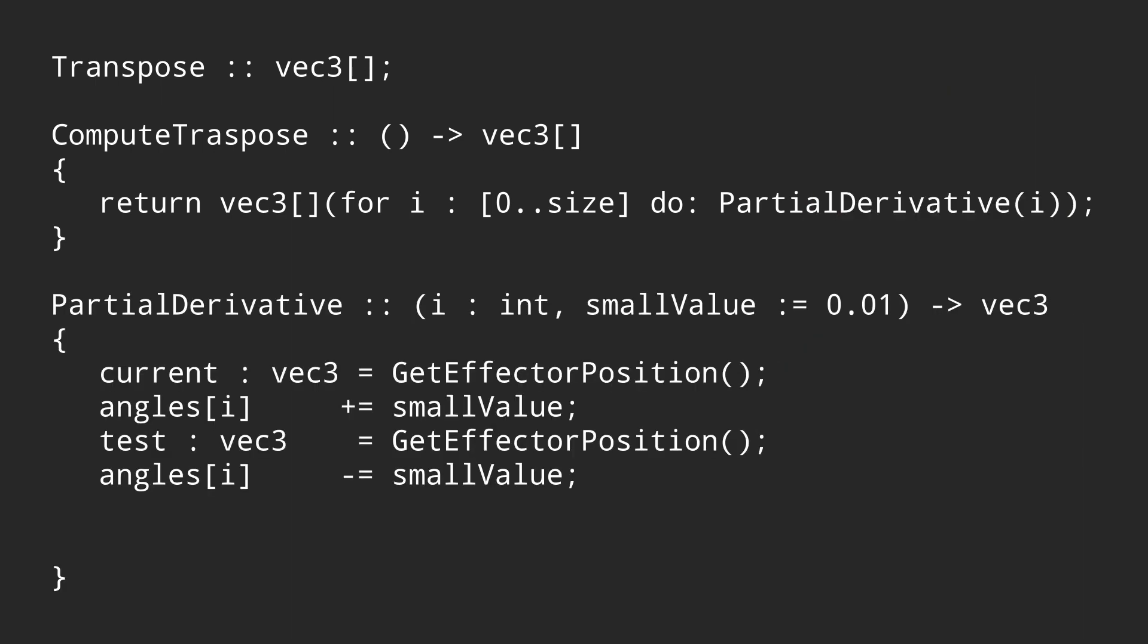So for each axis that the joint can move on, we want to perturb it by a small amount and see how doing that changed the end effector, and record that change. So after that, all this is left to do is subtract the position of the effector with without that change, and store the delta over the angle change. This is the partial derivative.